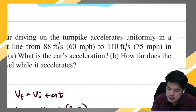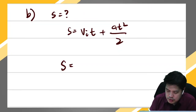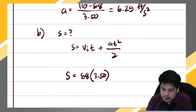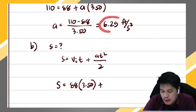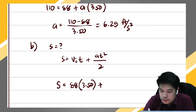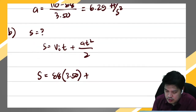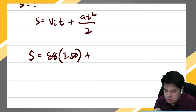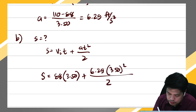So the distance covered as it accelerates from 88 to 110: the initial velocity was 88, it took 3.50 seconds to speed up to 110. There may be a slight variation in the answer due to rounding off — if we solve it directly versus using another formula, the values should be very close. Our acceleration is 6.29.